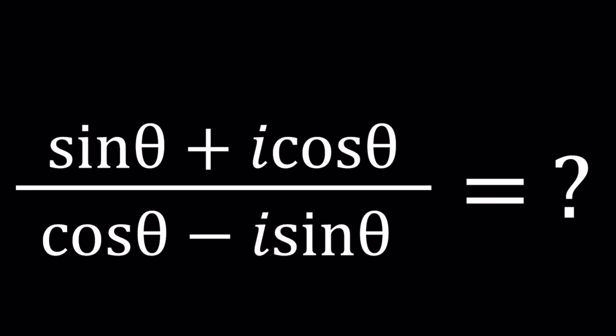Hello everyone, welcome to A plus BI. This channel is all about complex numbers, and in this video we're going to be simplifying a trigonometric expression with complex numbers — a complex trigonometric expression. When you get a problem like this there are a lot of ways to look at it, so I'm going to be presenting four methods and they're all going to be complete. Let's go ahead and start with the first method.